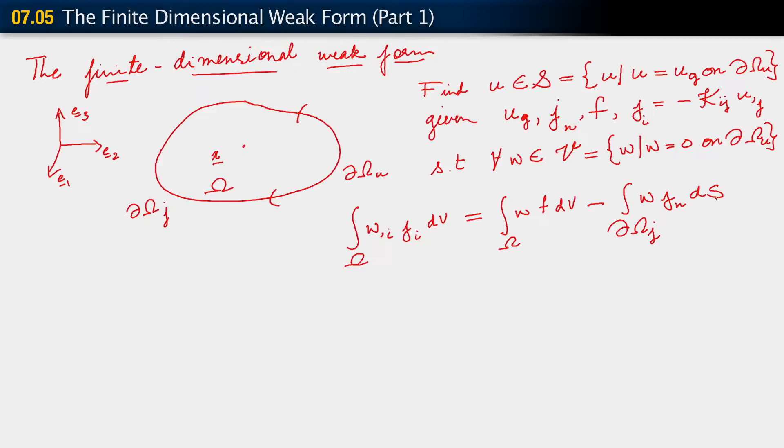So this is our weak form that we derived. At this point, we haven't said anything special about our spaces S and V, except that S includes the Dirichlet boundary condition and V includes the homogeneous Dirichlet boundary condition. So at this point, we are really talking of an infinite dimensional weak form. As we made the observation in the case of the 1D problem, that does not make it any easier to solve than the strong form. We really haven't made any steps towards making it easier for us to solve or towards developing approximations. Just as before, we develop approximations by going to a finite dimensional form.